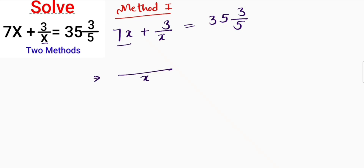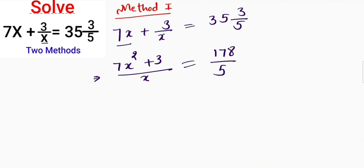Taking the LCM of x, I will get 7x squared plus 3 all over x. I will convert the mixed fraction on the right-hand side into an improper fraction, which becomes 178 divided by 5. Now I will cross-multiply, giving 7 times 5 equals 35, so 35x squared plus 3 times 5.